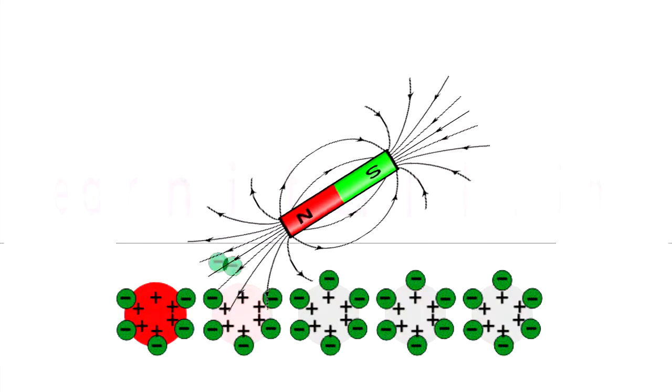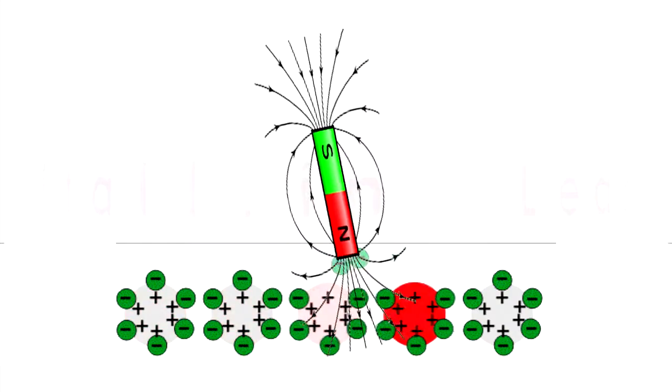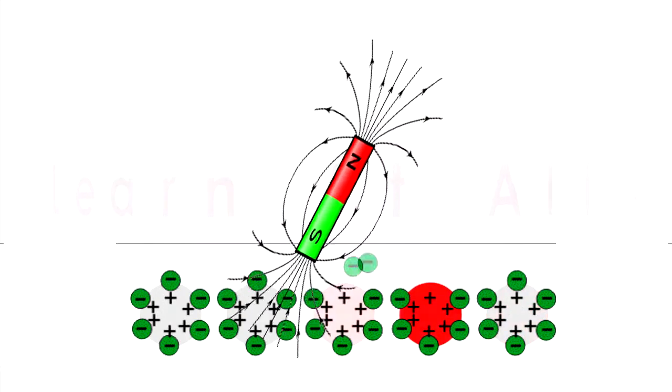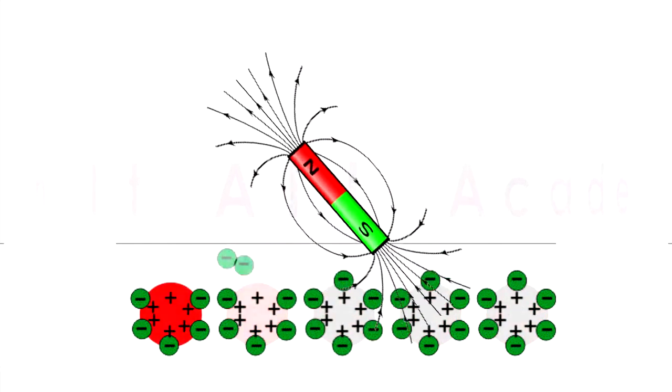Now what if the current flows in both directions in a conductor? Is it possible? Yes, of course it's possible. And we call that current the AC or alternating current.